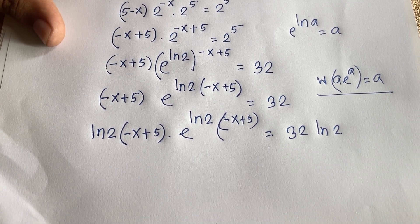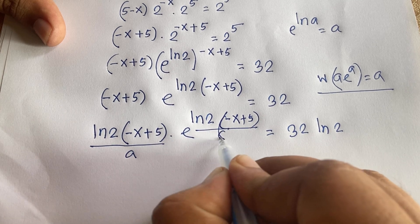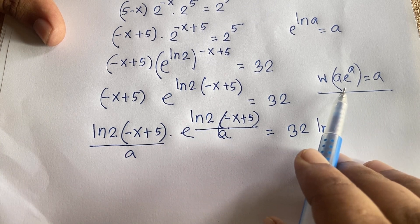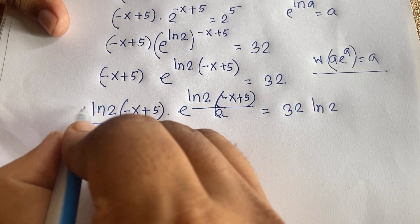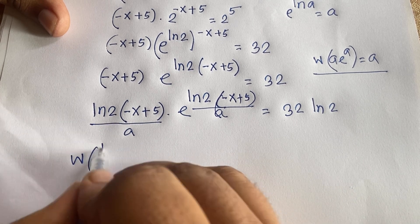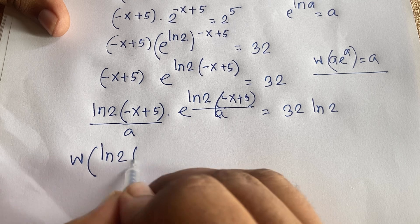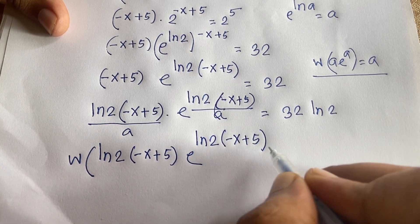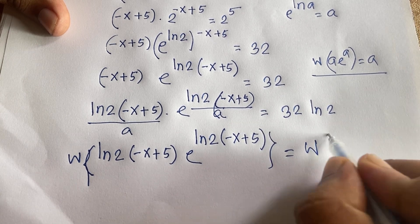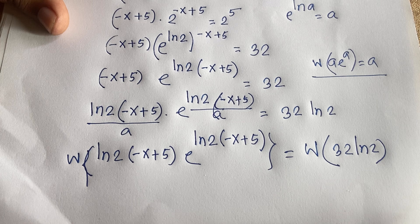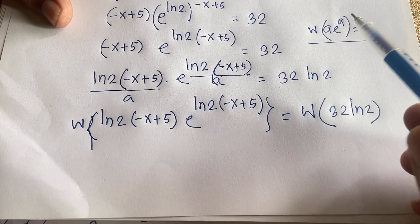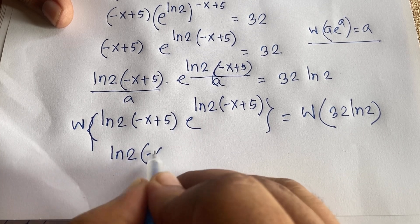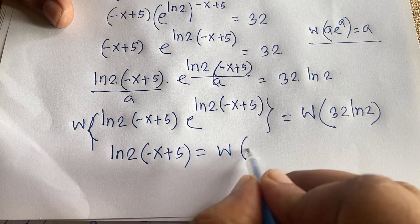Now if we think of this as a · e^a, we can apply the Lambert W function to both sides. So W of [ln 2 · (minus x plus 5) · e^(ln 2 · (minus x plus 5))] equals W(32 · ln 2). Since W(a · e^a) equals a, we get: ln 2 · (minus x plus 5) equals W(32 · ln 2).